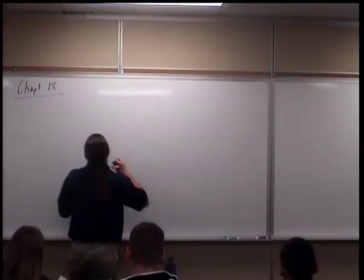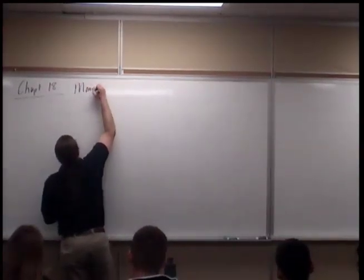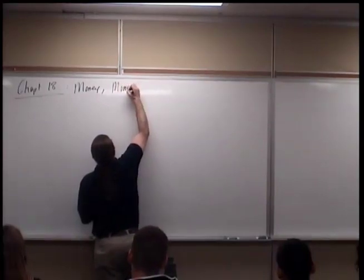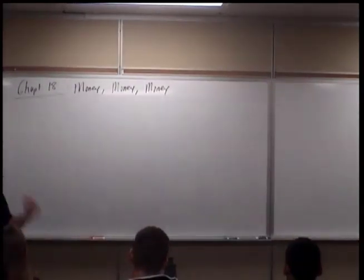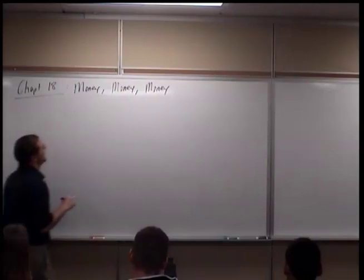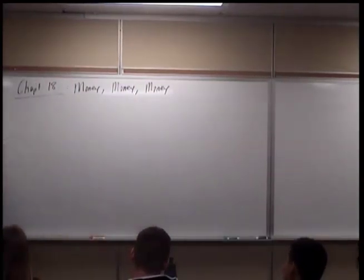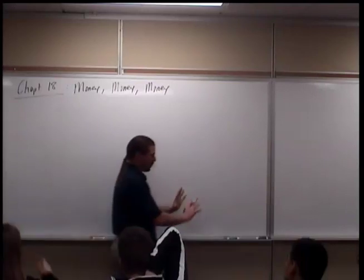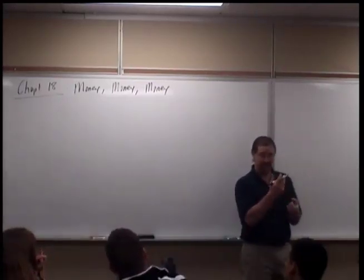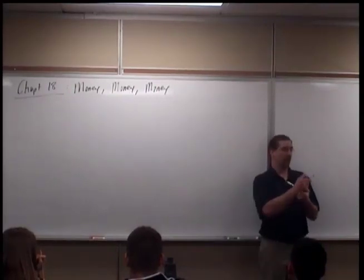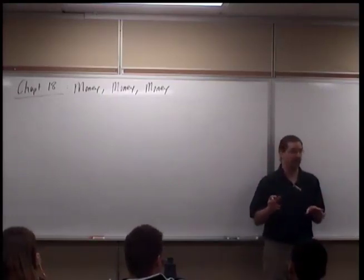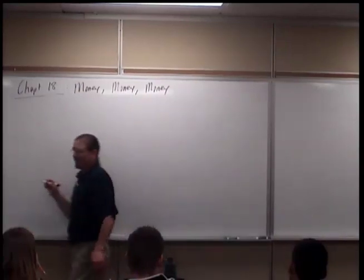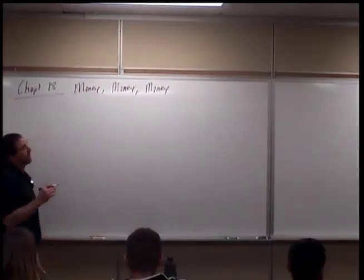All right, so chapter 18 - and you must say it correctly - money. So what we were talking about in the first few chapters of this second half of the class was all leading up into fiscal policy, which is government mucking around with spending and taxing. That's one way to correct the economy. Now, another way is to use money instead of government spending or taxing.